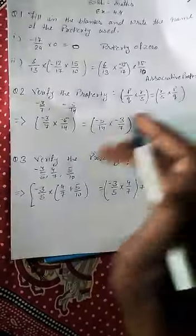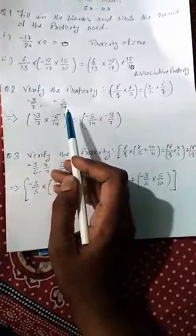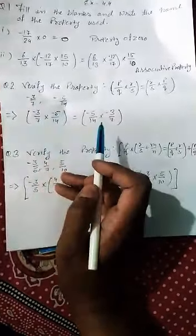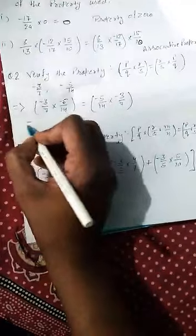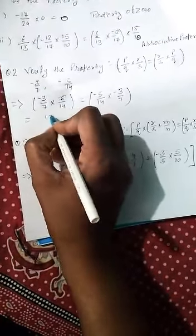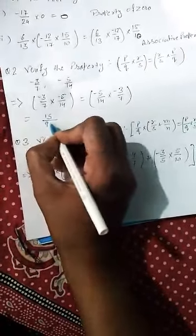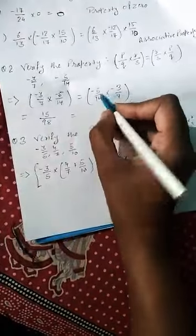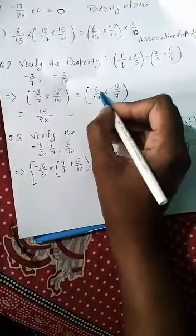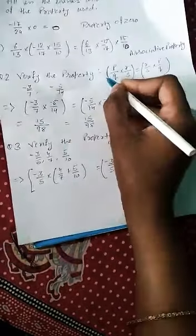Now we need to verify this property. The rational numbers given are minus 3 by 7 and minus 5 by 14. We have put these values in. Now we will solve this. We will cancel what can be canceled, otherwise we multiply. Minus 3 multiply by minus 5 equals 15, minus minus makes plus. And 7 multiply by 14 equals 98. On the right side, 5 times 3 is 15 and 14 times 7 is 98. This means our property is verified.